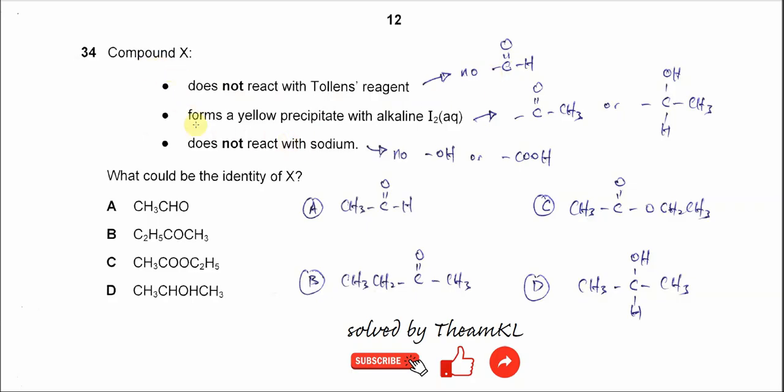Compound X forms a yellow precipitate with alkaline iodine solution, which means this compound has a methyl ketone or alcohol group.